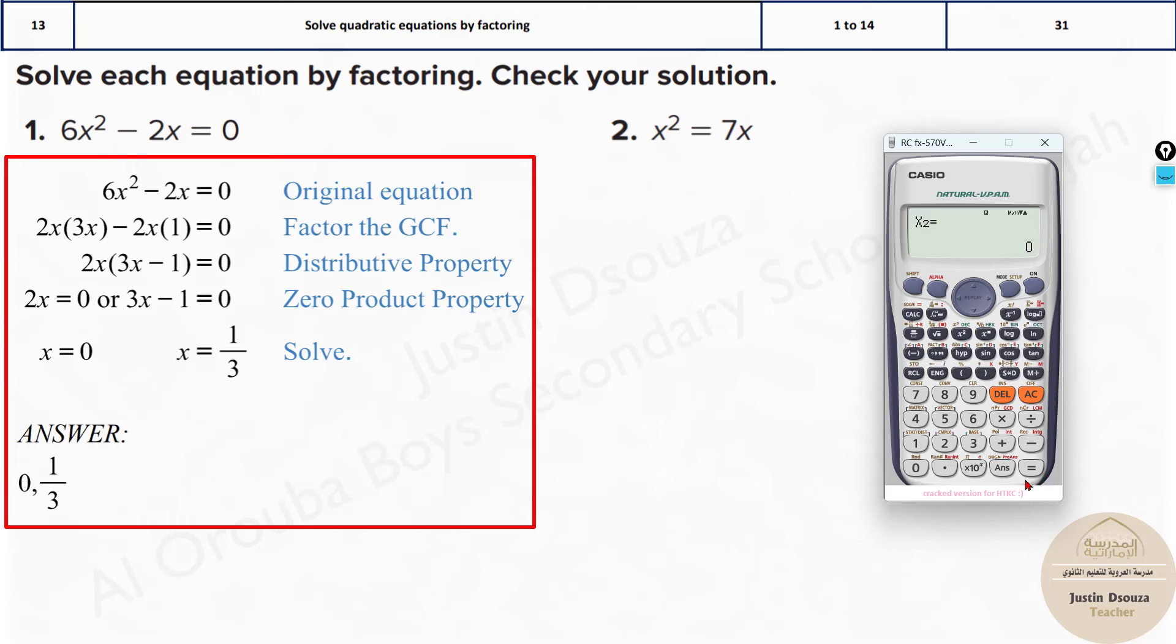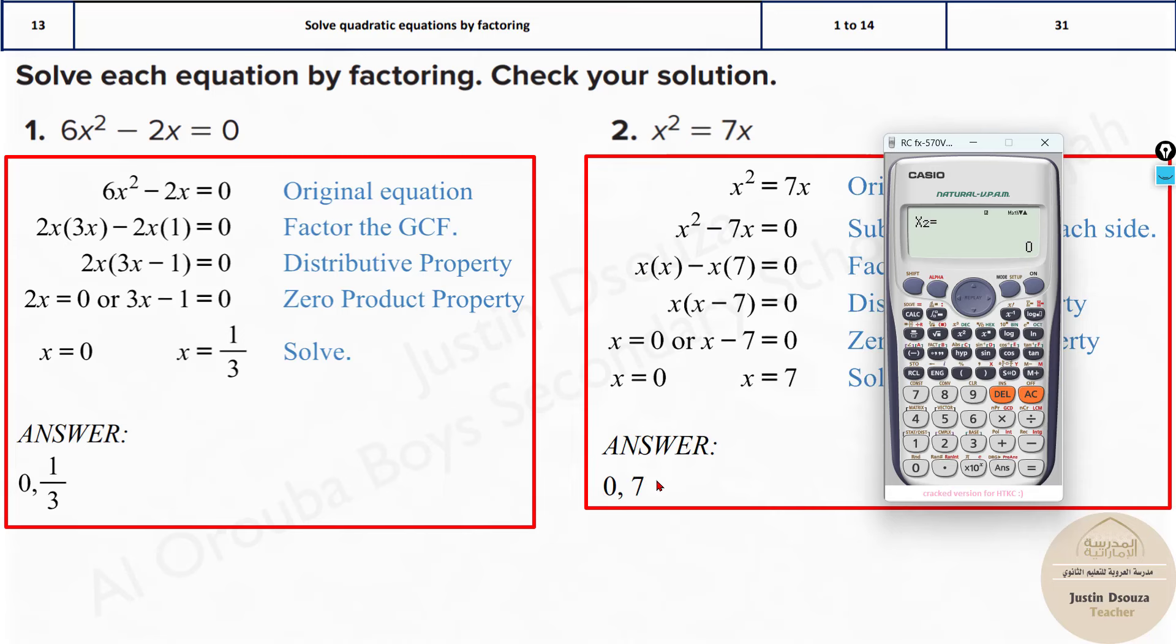Same thing can be done for the next one, but remember you need to bring all these terms to one side. I'll leave x squared as it is with coefficient 1. 7x moves to the other side and becomes minus 7, and lastly we have 0. The answers are 7 and 0.